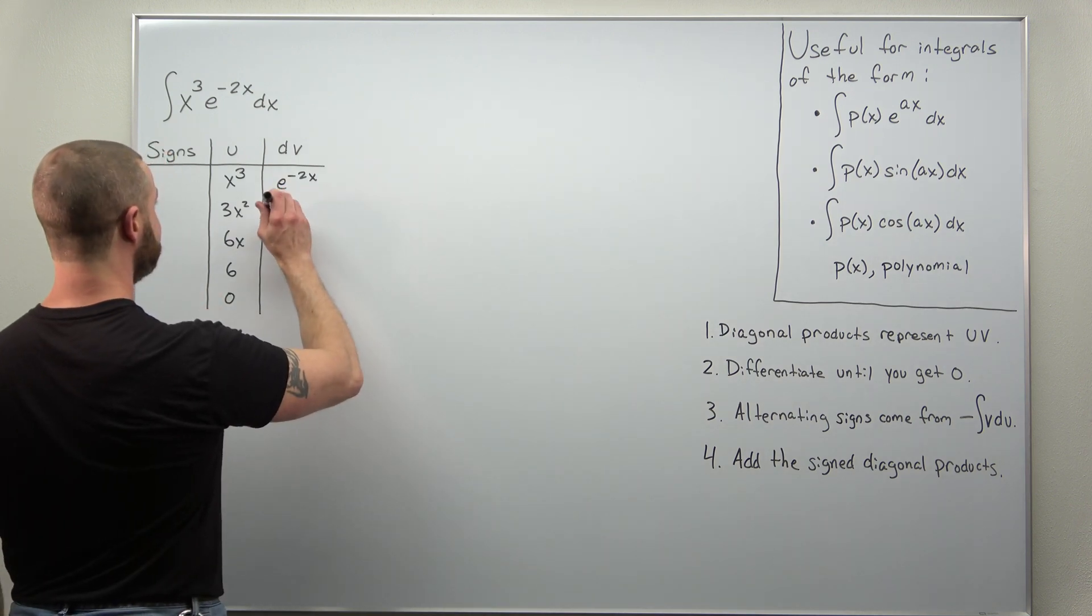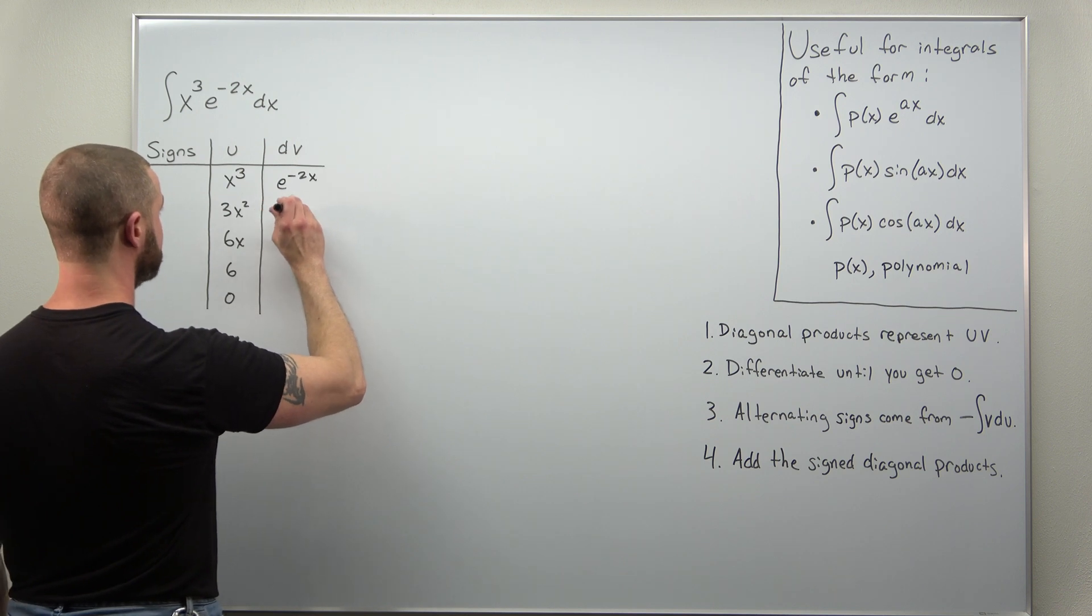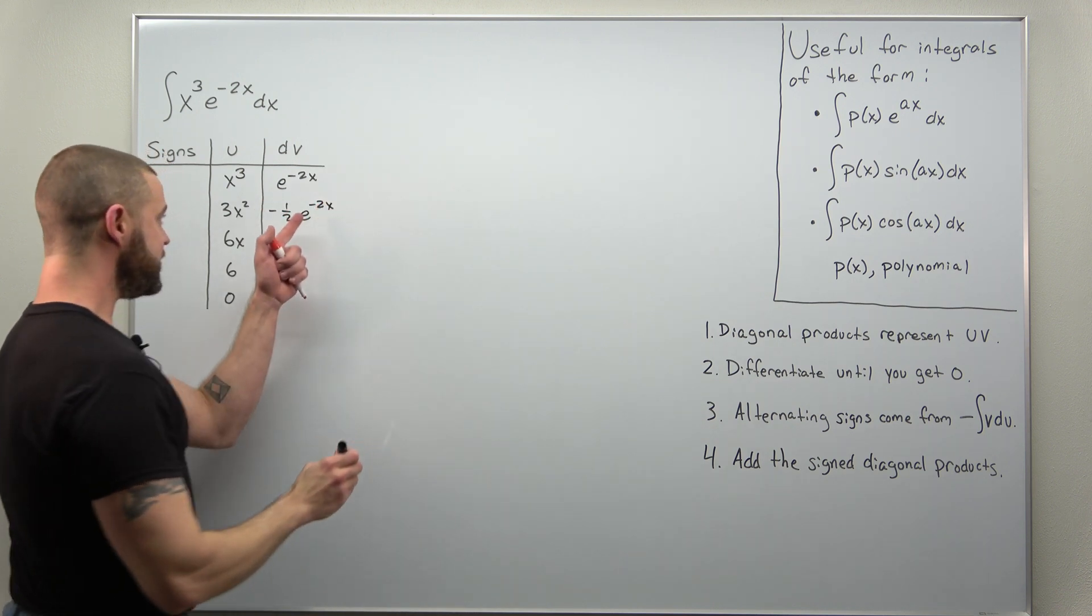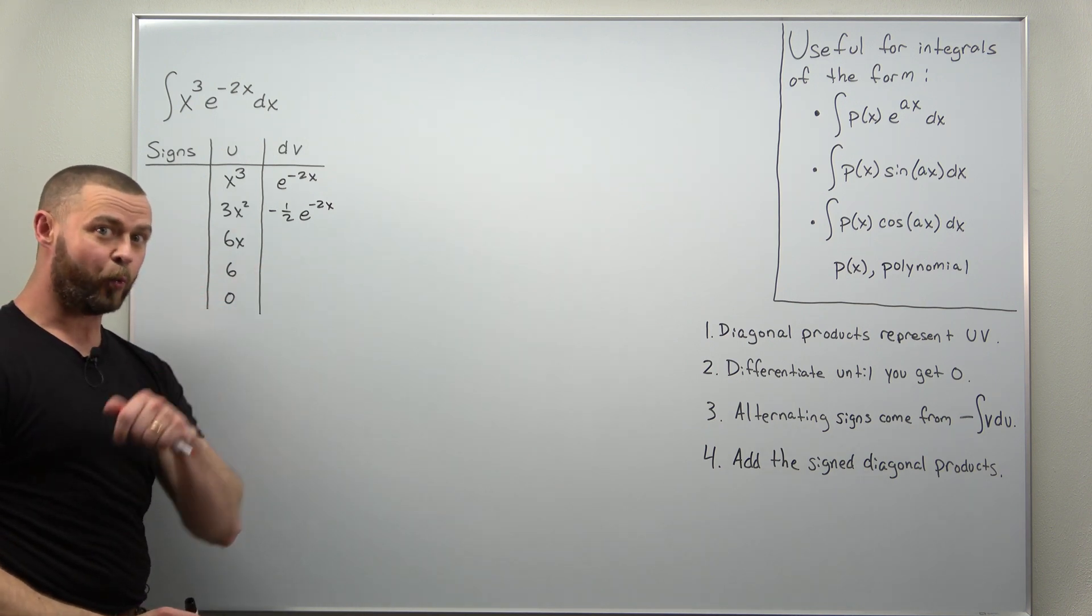So when you integrate this, you'll get factors of 1 over a, 1 over negative 2, and each time you integrate that, you're going to get a factor of negative 1 over 2.